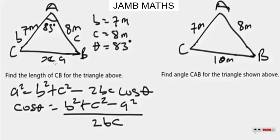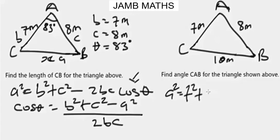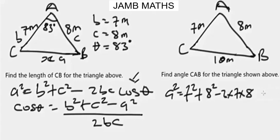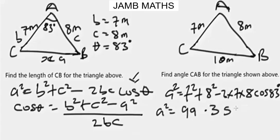We are looking for side a, so we'll work with the first formula as it will be easier. So a² equals b² plus c² minus 2bc·cosθ. Our b² will be 7², plus c which is 8², minus 2 times 7 times 8 times cos(theta in degrees). Let me put everything together in the calculator.